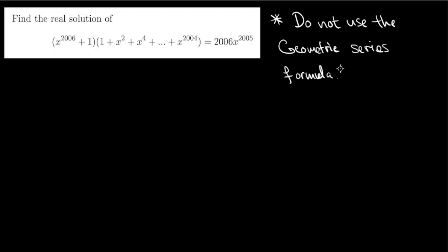You might want to try to solve this by yourself first before seeing the solution. One hint is that you should not use the geometric series formula. As we can see on the left-hand side, we have a summation up to x to the power of 2004 — that is a geometric series — but you shouldn't use the formula to simplify the summation because it doesn't make the problem easier.